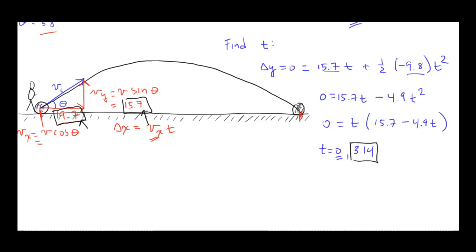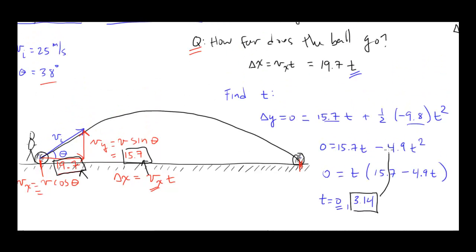So now I can finish the first question. I can plug this guy in right there. I can say 19.7 times 3.14, and that's going to give me my total horizontal range, which in this case is about 62 meters. Final answer. So this distance is 62 meters from here all the way over to there. That's the first sort of question that might be asked.